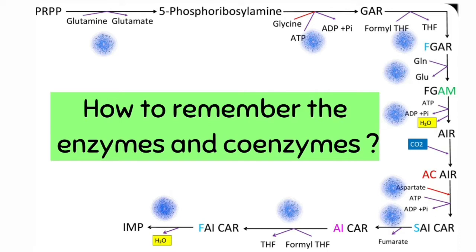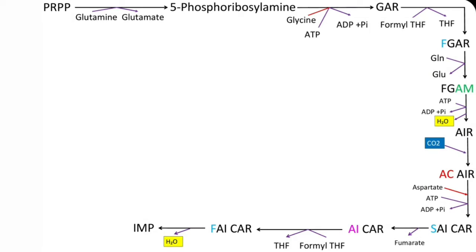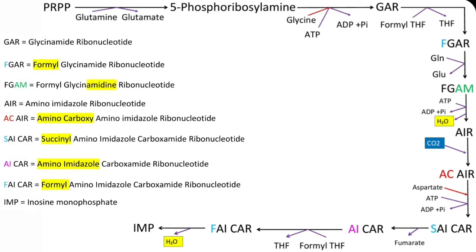Now coming to the second part, to remember the enzymes and coenzymes involved in these reactions. In the second reaction, Phosphoribosylamine is converted to GAR. GAR means Glycinamide Ribonucleotide. So glycine is involved in this reaction. As glycine condenses with Phosphoribosylamine, it requires energy, so ATP is utilized. The enzyme catalyzing this reaction is Synthetase.